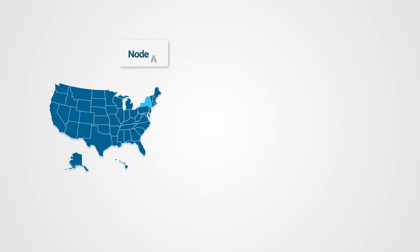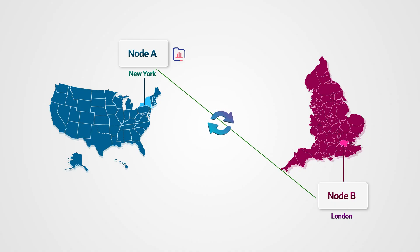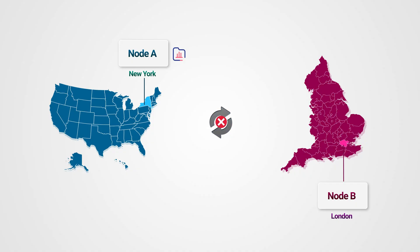Here's where things get interesting. Let's say we have a simple setup with just two database nodes — Node A in New York and Node B in London. When you update your data, it gets written to one node, which then syncs that update with the other node. But what happens when these nodes can't communicate with each other? This is called a network partition. Maybe there's a problem with undersea internet cables, a data center goes down, or there's just too much traffic overwhelming the network. Suddenly, Node A and Node B are isolated and can't sync updates with each other. This is where the CAP theorem kicks in.